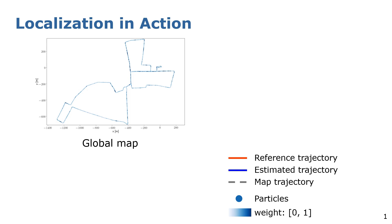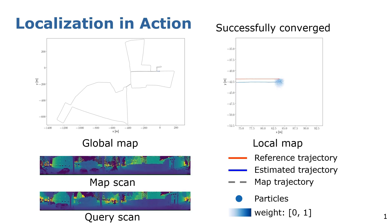Here we show a demonstration of using our methods to localize a vehicle in an urban environment. The particles were first generated uniformly around the whole map. After several iterations, you can see that the particles converge successfully to the correct location in a very short time.